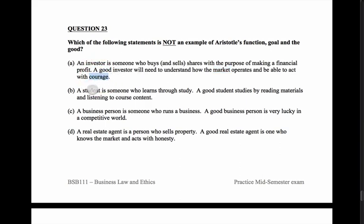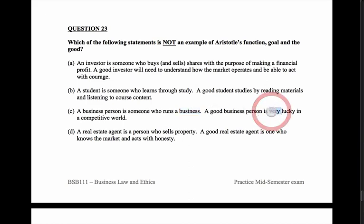A student is someone who learns through study — there's a clear goal. A good student reads materials and listens to course content — accumulating knowledge is one of Aristotle's virtues, so that sounds right. A business person is someone who runs a business — but there's no clear goal stated there. A good business person is very lucky — but luck isn't a virtue, so that does not match Aristotle's view.